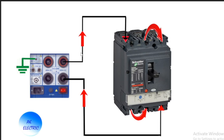Current circulation will be like this: current enters the MCB at R phase, passes through the jumper cable from one terminal to the next, then passes through another jumper from that terminal to the next, and finally leaves the MCB and returns to the test kit — forming a closed circuit.